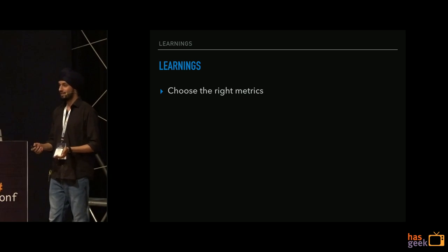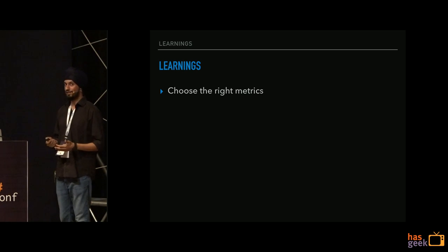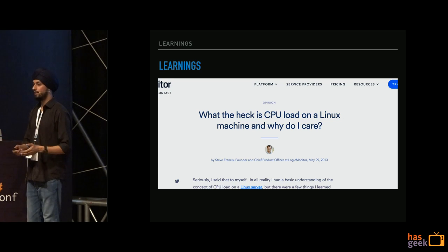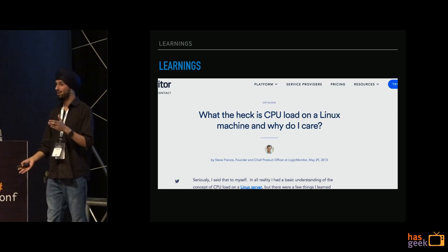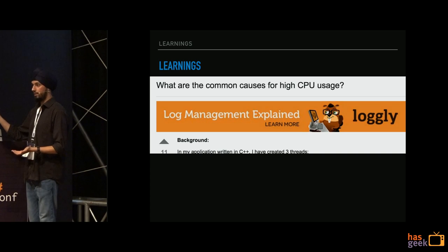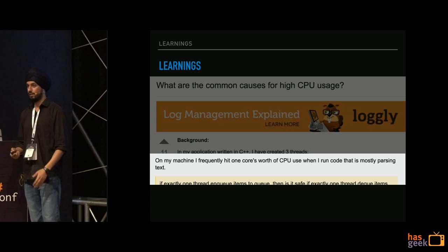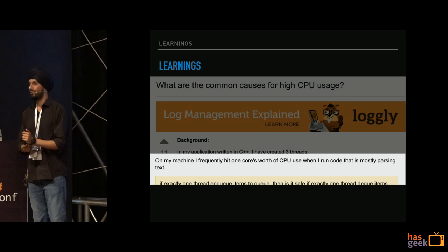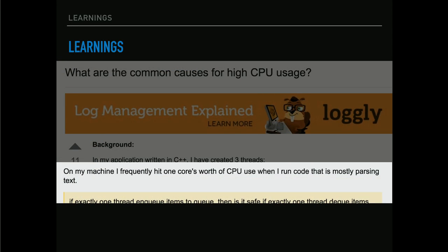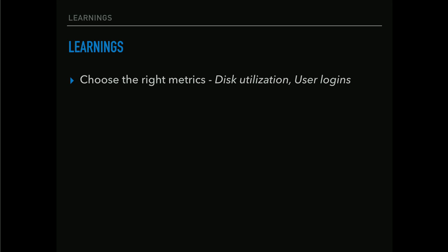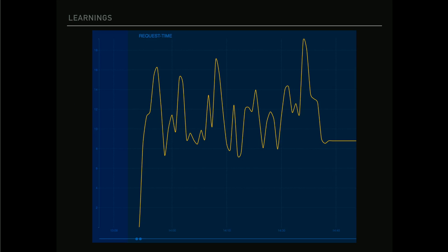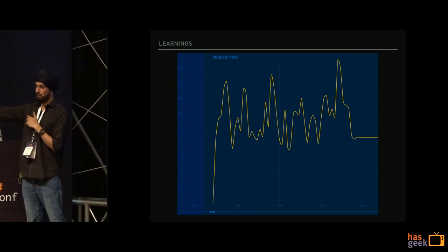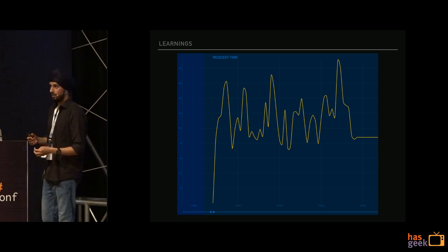I had a few learnings based on this flow. The first was to choose the right metric. When someone talks about monitoring, the first suggestion is often to plot CPU load — but I often didn't know what goes into calculating it. I found that the formula to compute CPU load is actually very complex. Further research showed that parsing text can spike CPU load — but if my application requires parsing text, I will be parsing text, so what is a CPU load plot really telling me? Choose simpler metrics that point to exactly what's happening — for example, disk utilization or user logins.